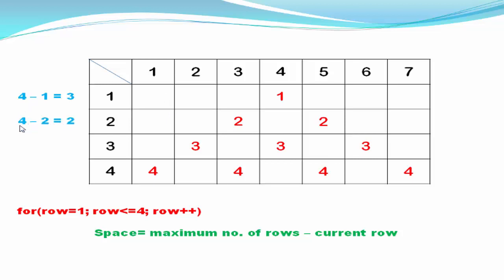For the second row: four minus two — four is the maximum number of rows and two is the current row — so it will print two spaces. For the third row, four minus three equals one space. For the fourth row, four minus four equals zero spaces, meaning no space will be printed.